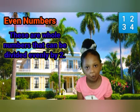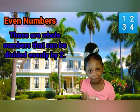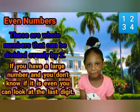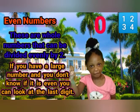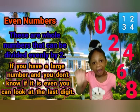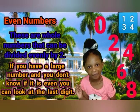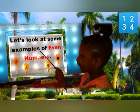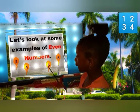Even numbers are those numbers that can be divided evenly by two. If you have a large number and you don't know if it is even, you can look at the last digit. If it is zero, two, four, six, or eight, then it is even. Let's look at some examples. Even numbers include two, four, six, and eight.